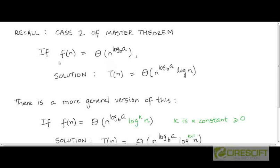If you recall, Case 2 of master theorem said that if f(n) and n^(log_b(a)) have the same rate of growth, then the solution to the recurrence T(n) = a·T(n/b) + f(n) is T(n) = θ(n^(log_b(a)) · log n). This was the scenario where the level sums at every level in the recursion tree were the same, so the total cost was the cost at any level multiplied by the height of the tree, which is log n.